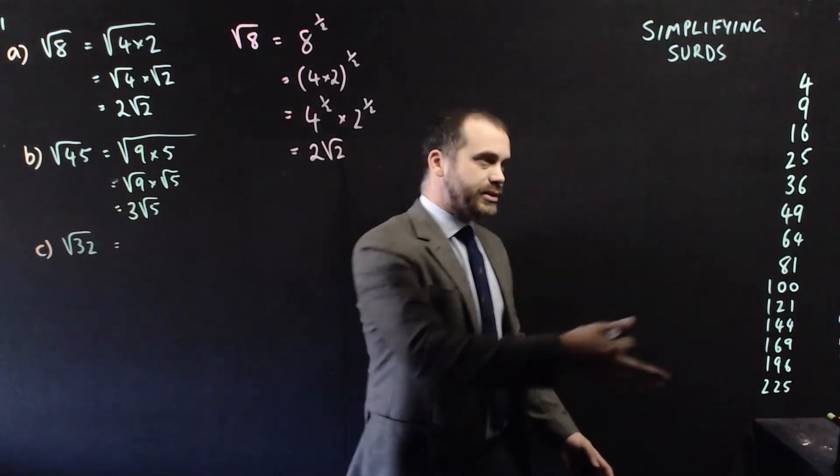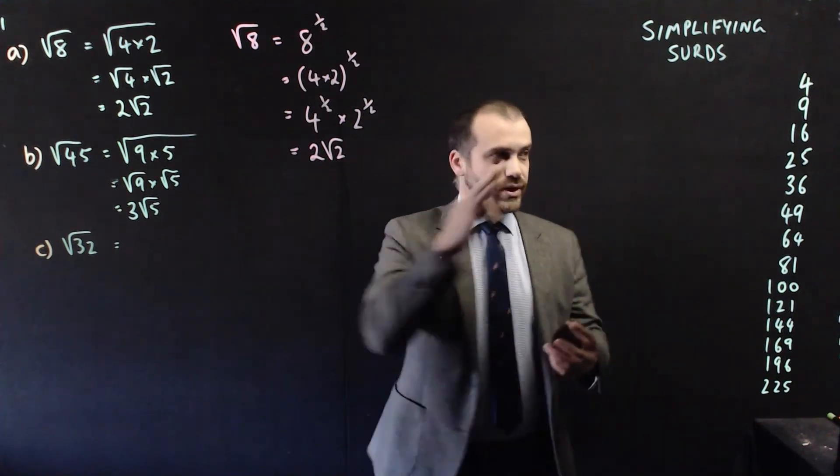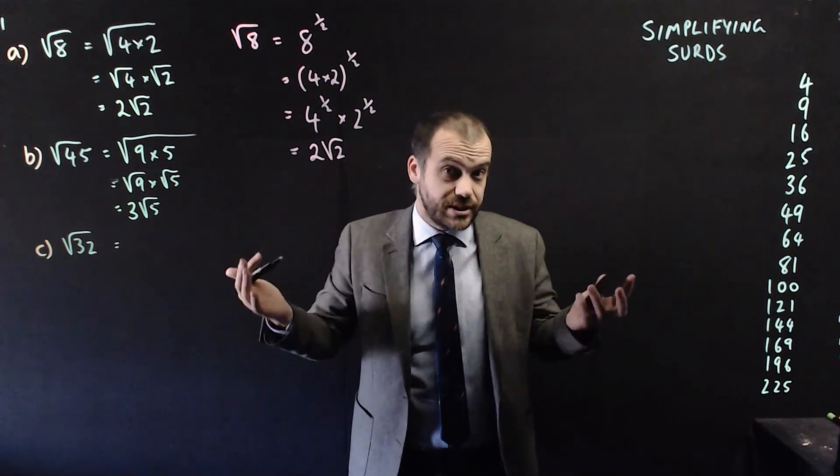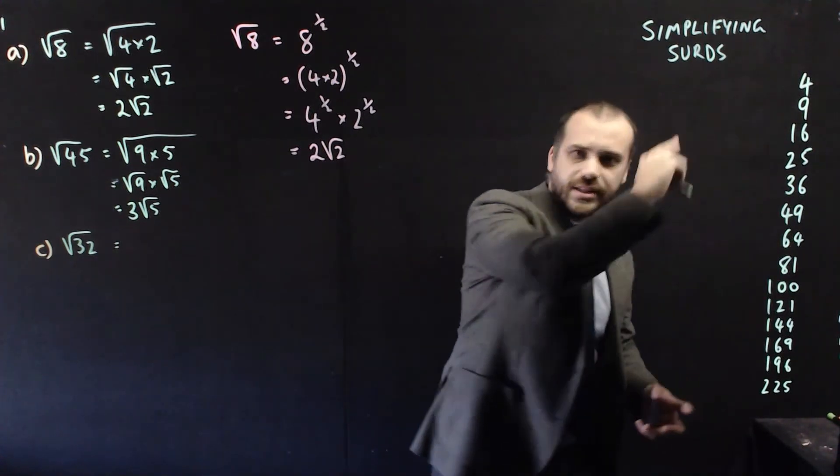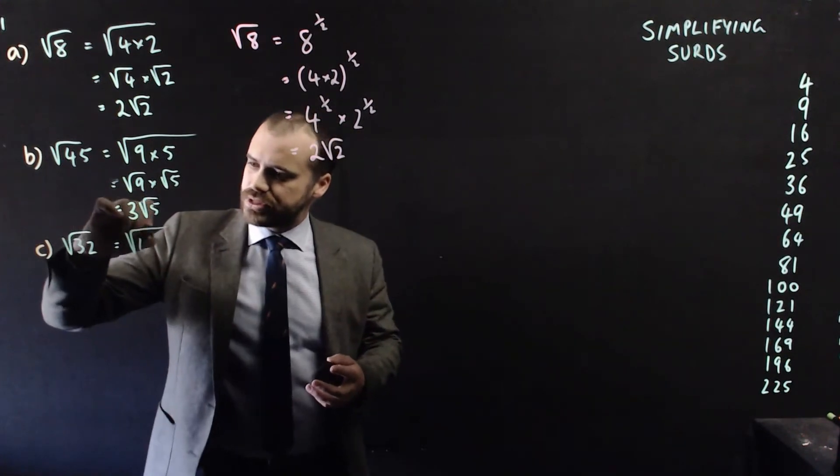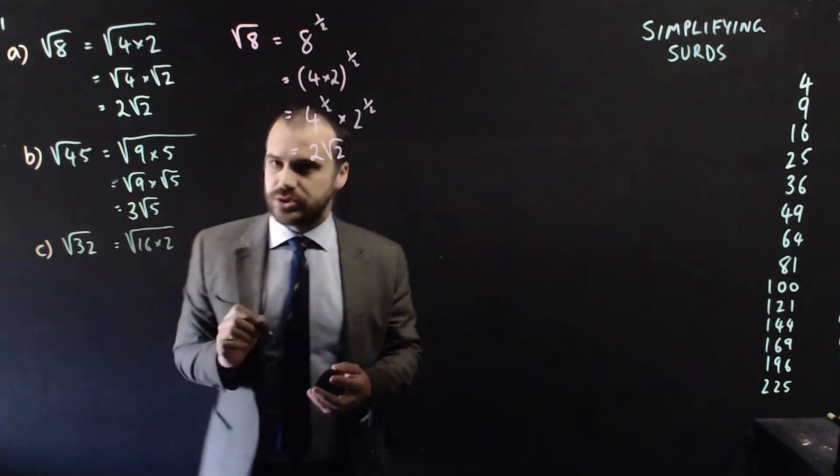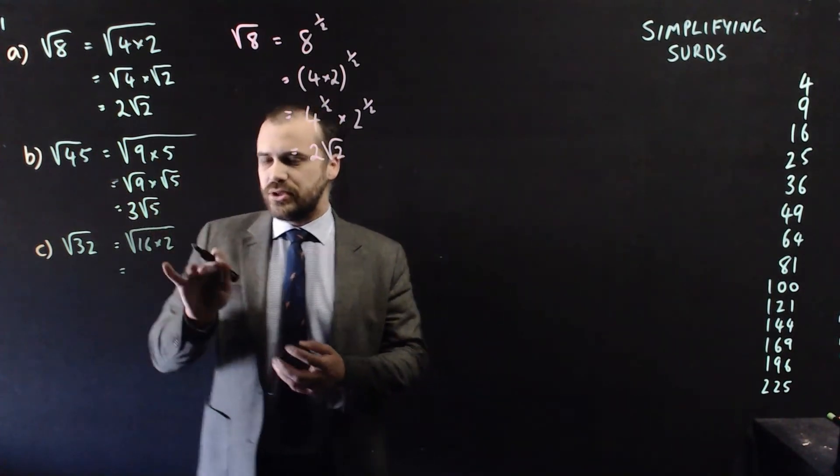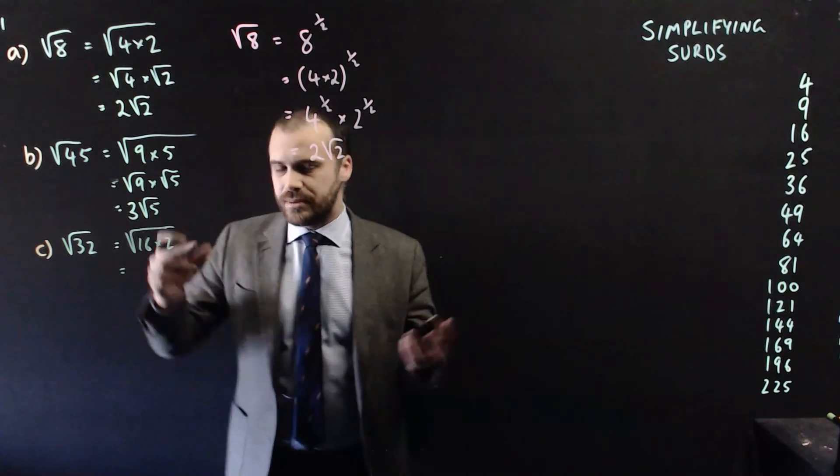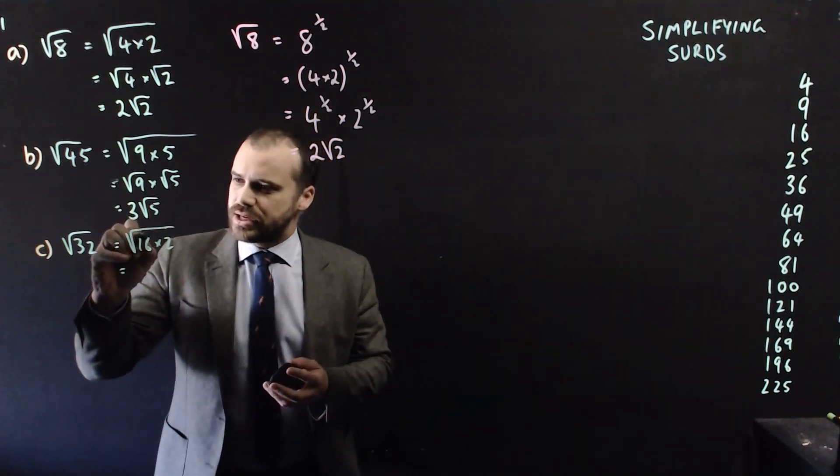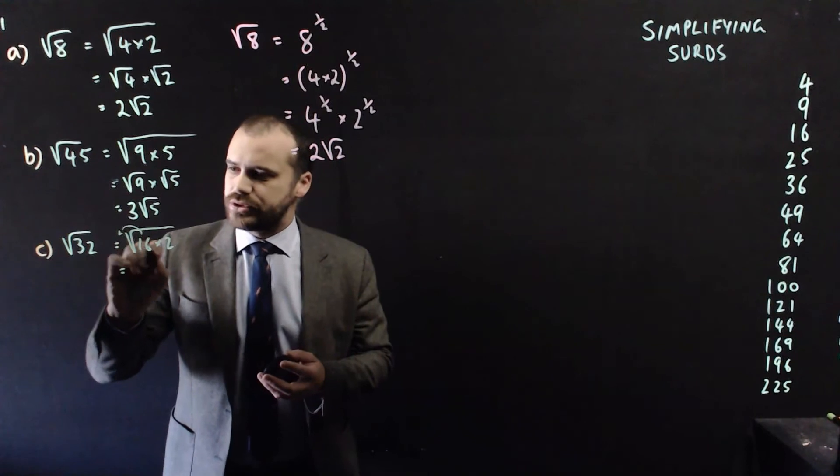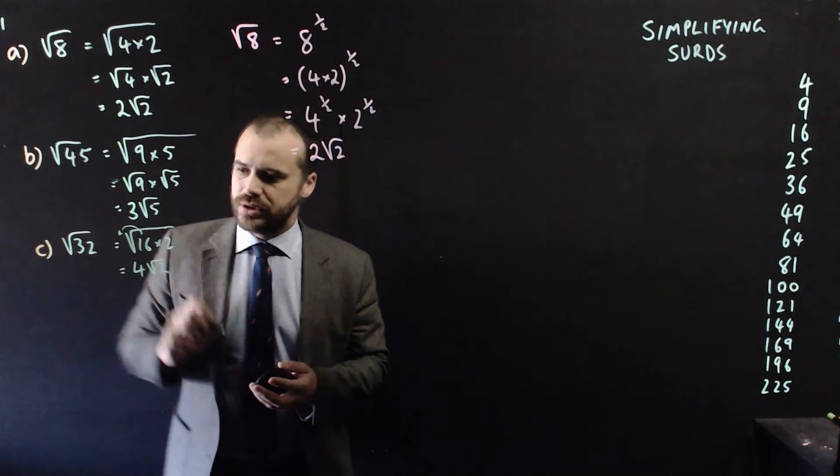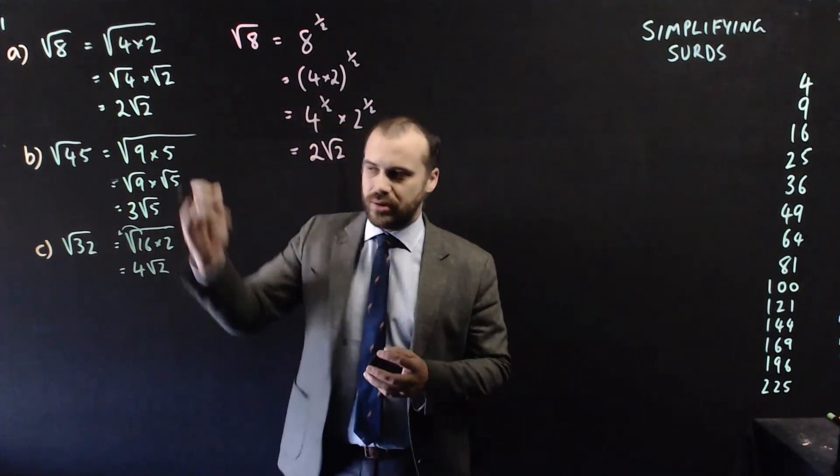So root 32. Again let's look here. Now we know that this factor that we're looking for can't be more than half of 32. Half of 32 is 16. That's what we can use here. So it's root 16 times 2. Now I've been doing this step here, but you kind of don't have to do that step. You can jump straight to this step: root 16 coming out of the square root sign. The square root of 16 is 4, so 4 root 2. Save us a little bit of time there in our working.